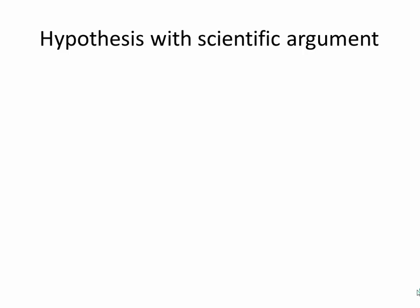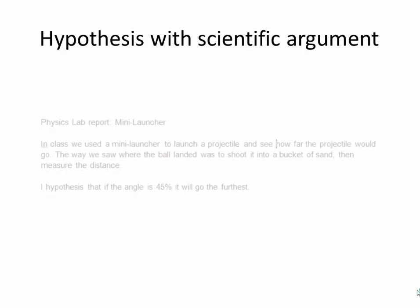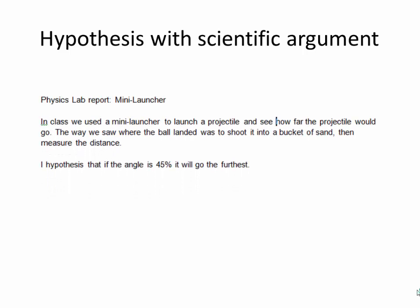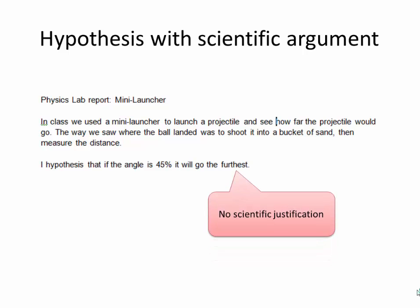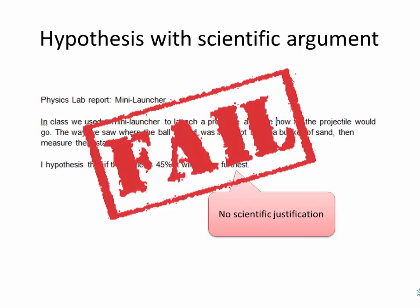The second one: the hypothesis has to be there and it has to have a scientific argument. In our example, it says 'I hypothesize that if the angle is 45 degrees it will go the furthest.' Now this is just a random guess — there's no scientific justification. Fail.